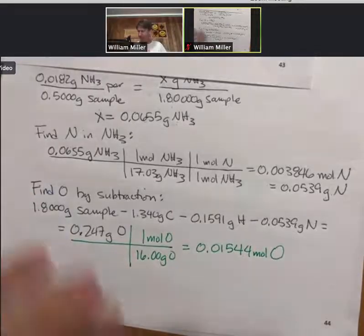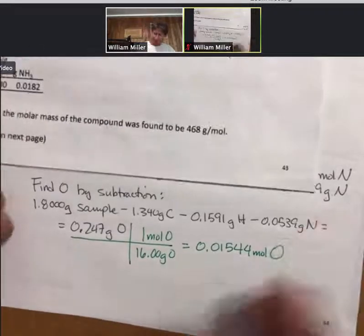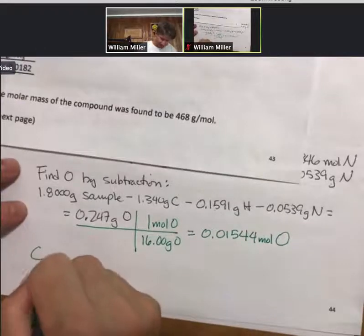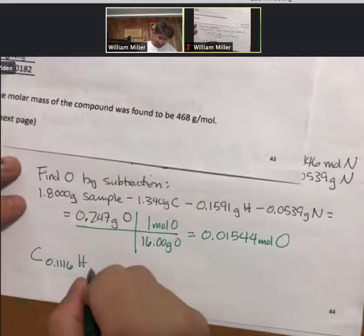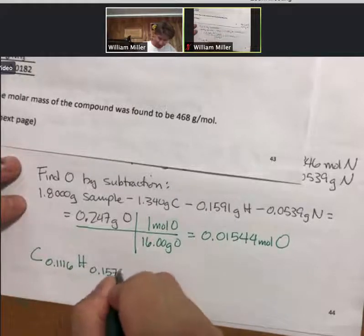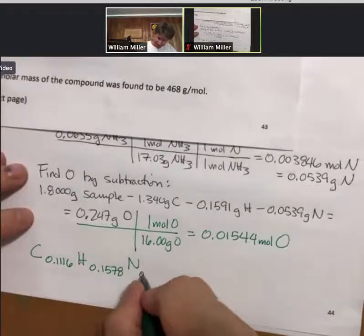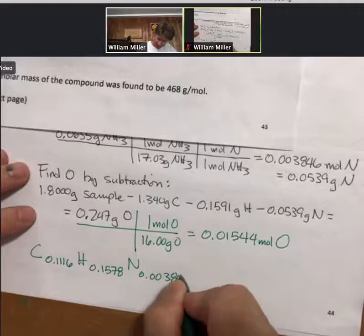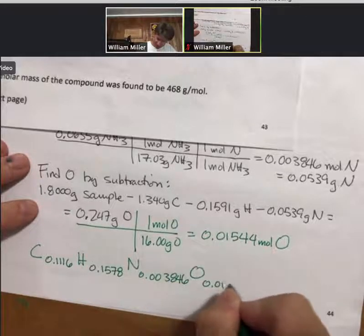Alright, so here we go. Just like the last problem, I'm going to get organized. I'm going to write C, 0.1116, H, 0.1578. I'm going to do N next, 0.003846, 0.01544.